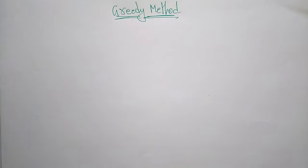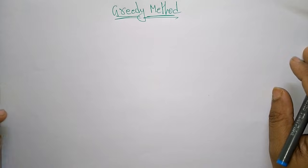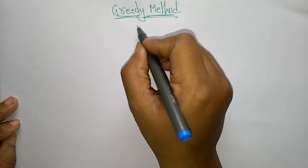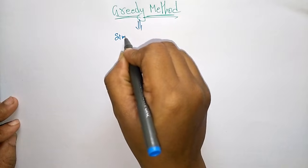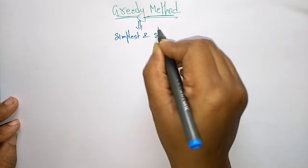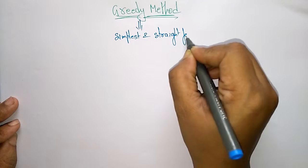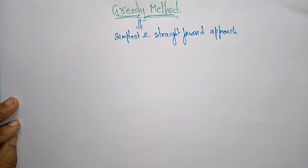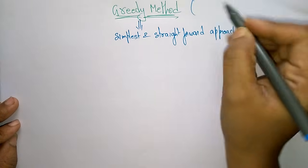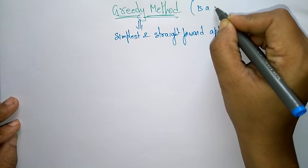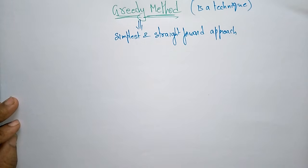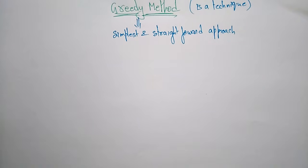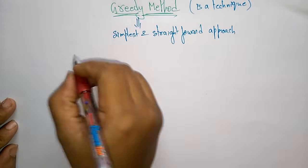Moving to the next topic, the Greedy Method. When compared to all algorithm approaches we have discussed so far, the simplest and most straightforward approach is called the Greedy Method. This greedy method is actually not an algorithm — it is simply a technique. So it is better to call it a technique rather than an algorithm.